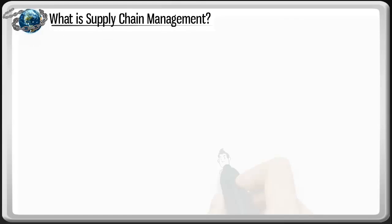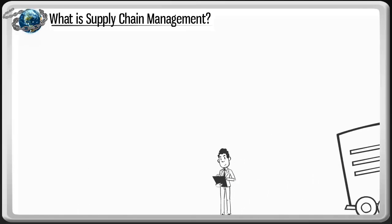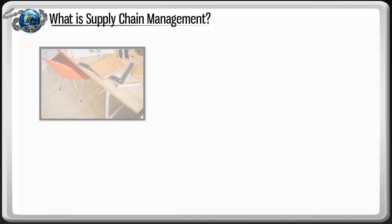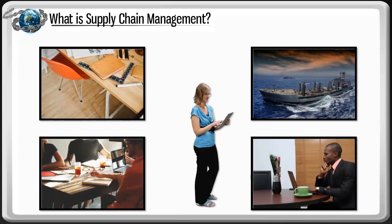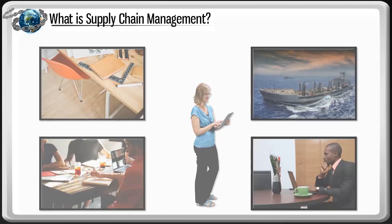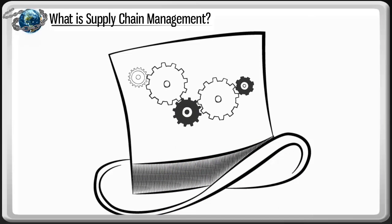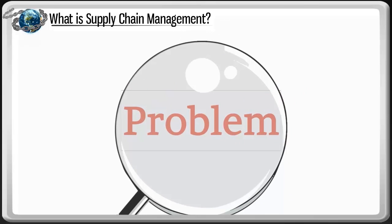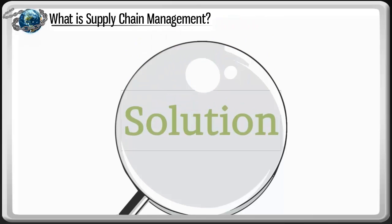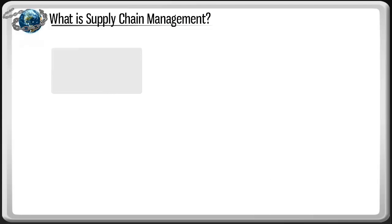Supply chain management means improving the supply process from one end to the other. It includes the design, planning, execution, control, and monitoring of supply chain activities. The role of supply chain professionals is to put on their creative thinking caps and collaborate with various areas within the organization to identify the problem and find a solution that prevents the breakdown from happening again. There are four main links that make up the supply chain.